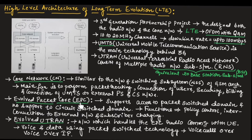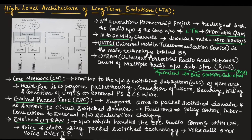Evolved Packet Core, or EPC, supports access to the packet switch domain only and does not support the circuit switch domain. The functions of EPC are to provide policy control, interconnection to external networks, and subscriber charging. Evolved UTRAN, or E-UTRAN, is the network that handles EPC radio communication with user equipment. It distributes voice and data using packet switch technology, and voice calls are transported over Voice over IP.